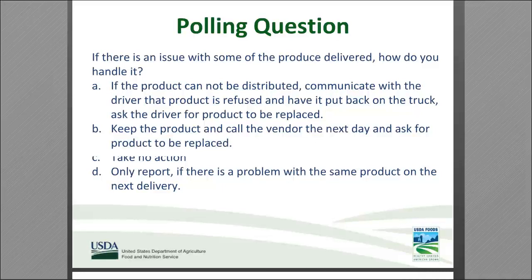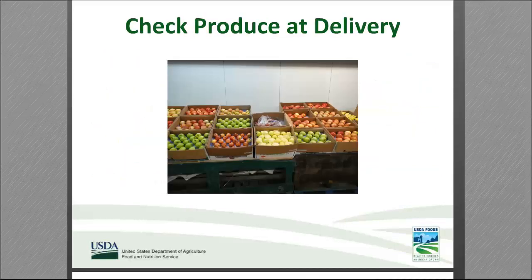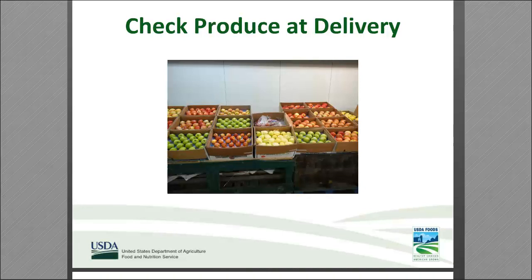Now Cassie will go into how to check your produce. The DOD contract requirement is that the vendor deliver U.S. number one or better product. The USDA develops grade standards which create a common language that everyone in the industry understands. So if I order lettuce from California and it comes to Virginia and I say there is an issue with decay and russet spotting and bruising, we are talking the same language. Today we will get a little deeper into U.S. number one or better.